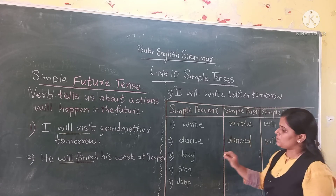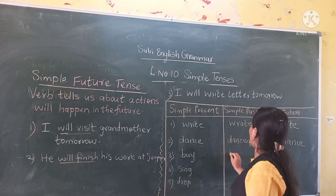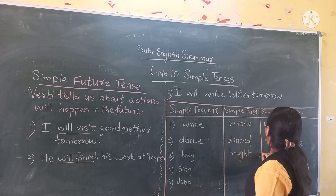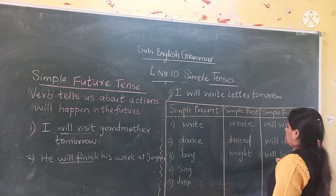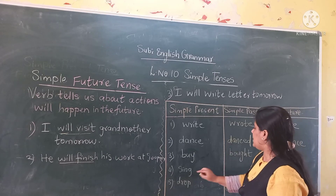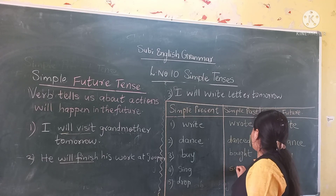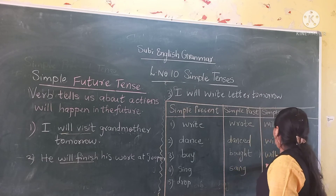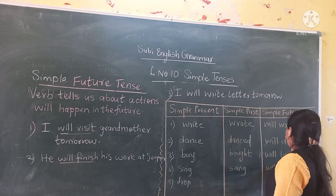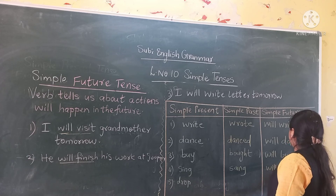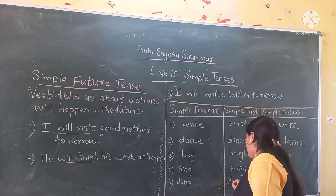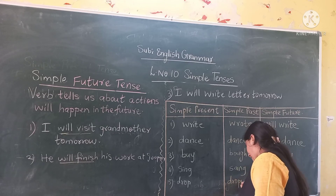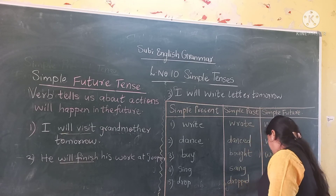Next: buy — what will be the past tense of buy? 'Bought.' And future: will buy. Sing — past: sang, future: will sing. Draw — past: drew, future: will draw.